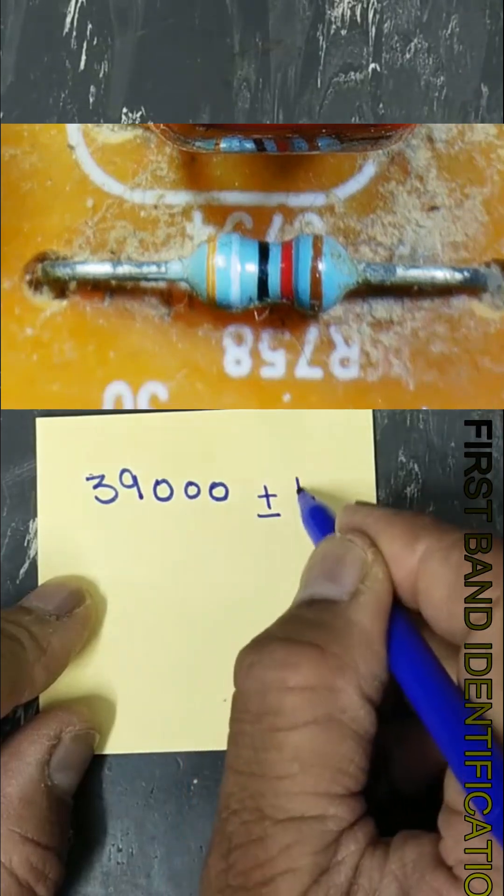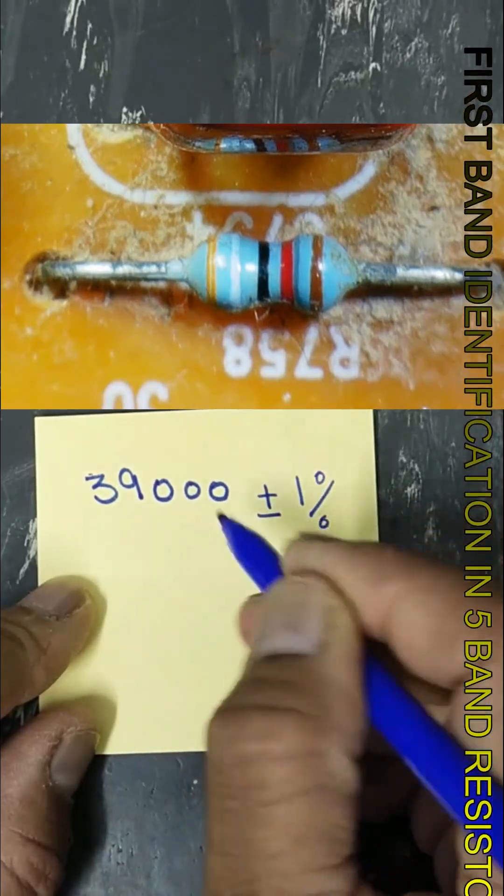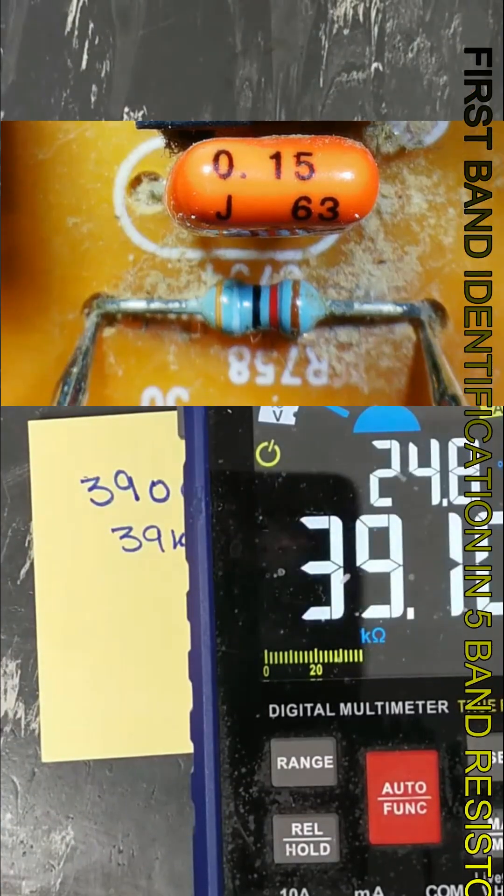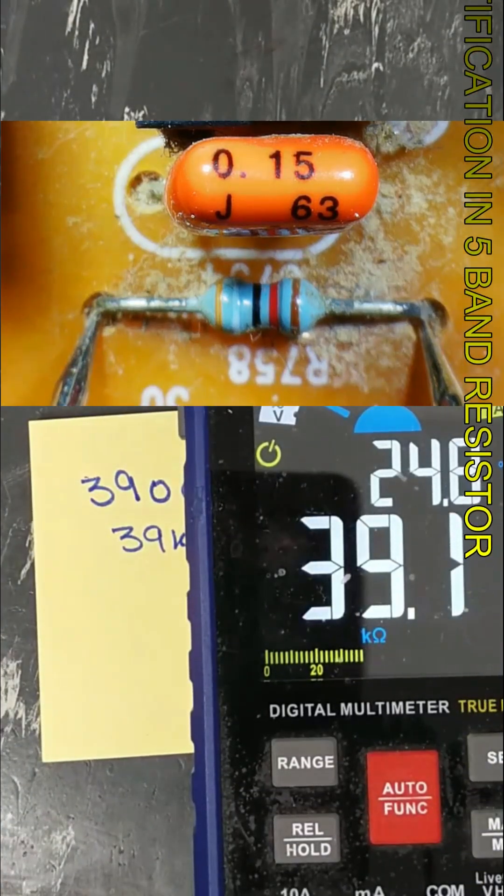Plus minus one percent. 39K. Set multimeter to resistance. It is 39.1K.